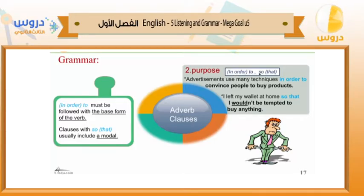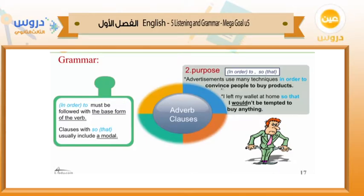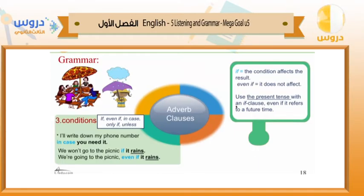For purpose, we use: in order to, so, or so that. For example: 'Advertisements use many techniques in order to convince people to buy products.' When using 'in order to,' it must be followed by the base form of the verb — in order to convince, in order to go, in order to write. For clauses with 'so that,' you will include a modal verb. For example: 'I left my wallet at home so that I wouldn't be tempted to buy anything.'